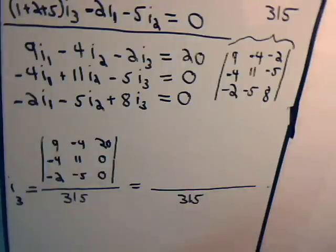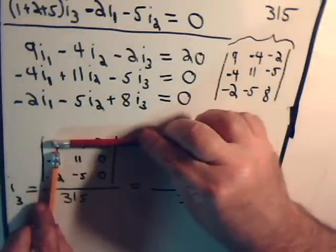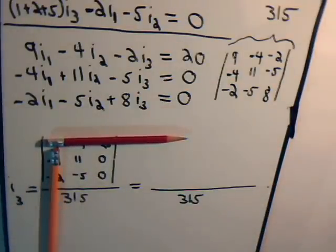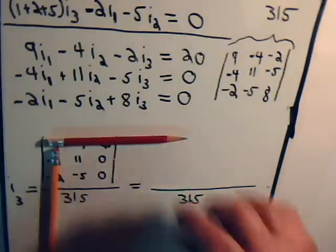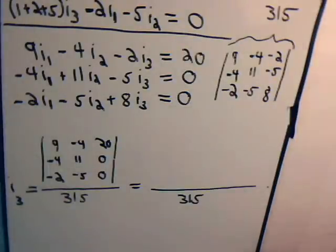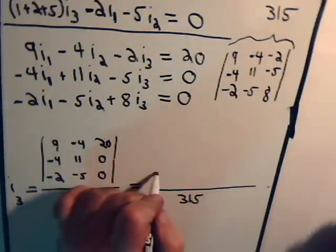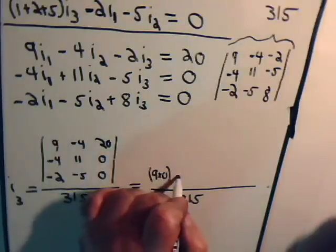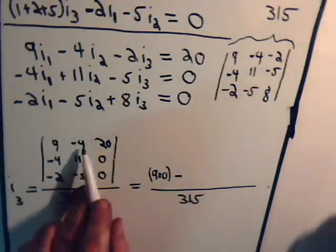So what do we have here? Here, we're going to have 9 times this sub-determinant. 11, 0. Or, 11 minus 5, 0, 0. That's 0. So we have 9 times 0. Minus negative 4. That makes that plus 4.